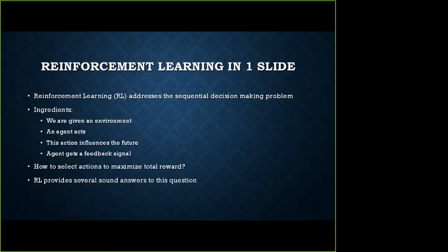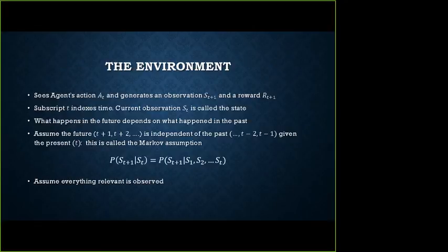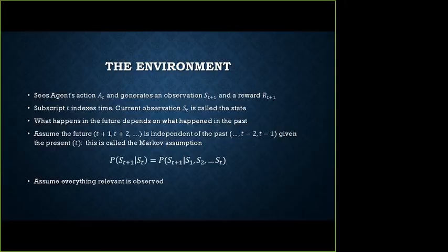Once you set up this setting of an environment and agent acting, you can have several formalisms to deal with this, but RL provides some of the answers to how to maximize total reward in a principled way. The environment sees agent's action A_T and generates an observation S_{T+1} and a reward R_{T+1}. The subscript T indexes time, and the current observation S_T is called the state.